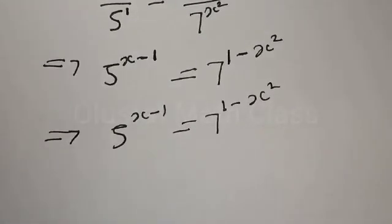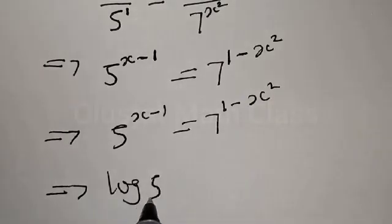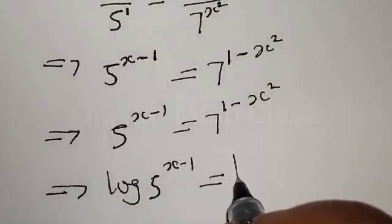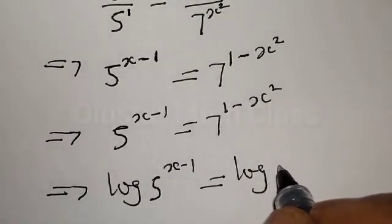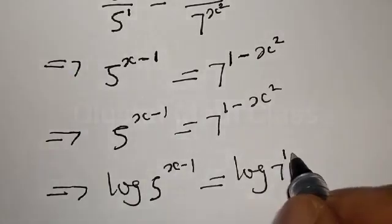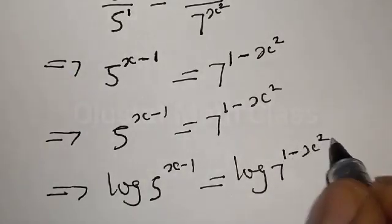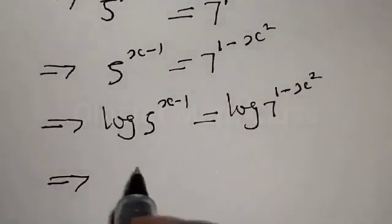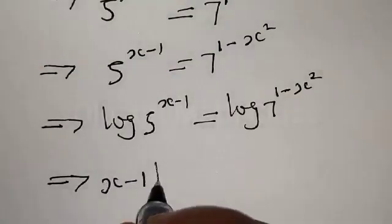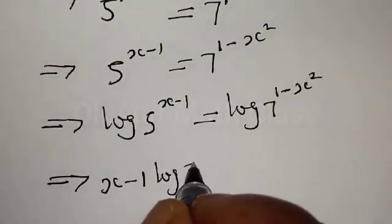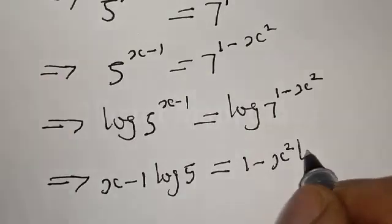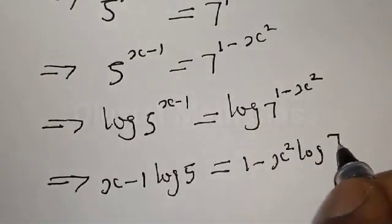Let's take the log of both sides. This implies that we have log of 5 raised to power (x minus 1) equal to log of 7 raised to power (1 minus x²). This gives us (x minus 1) log 5 equal to (1 minus x²) log 7.